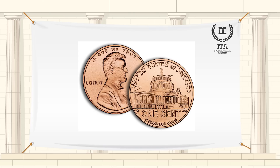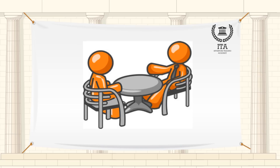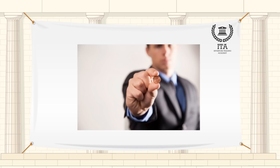In game theory, the game of matching pennies is often cited as an example of a zero-sum game. The game involves two players — let's call them A and B — simultaneously placing a penny on the table. The payoff depends on whether the pennies match or not.